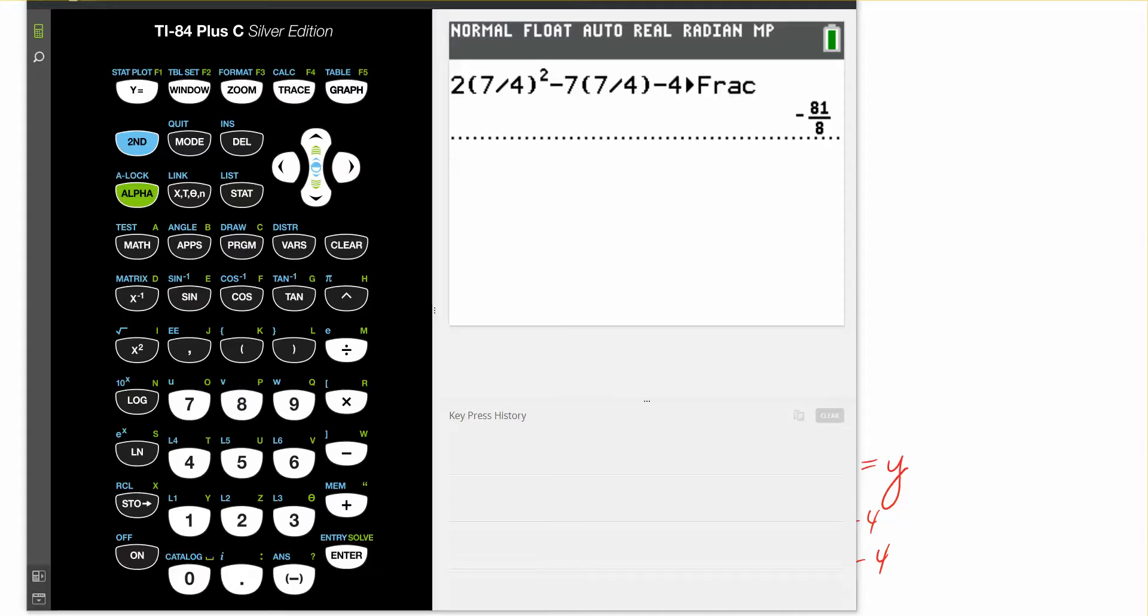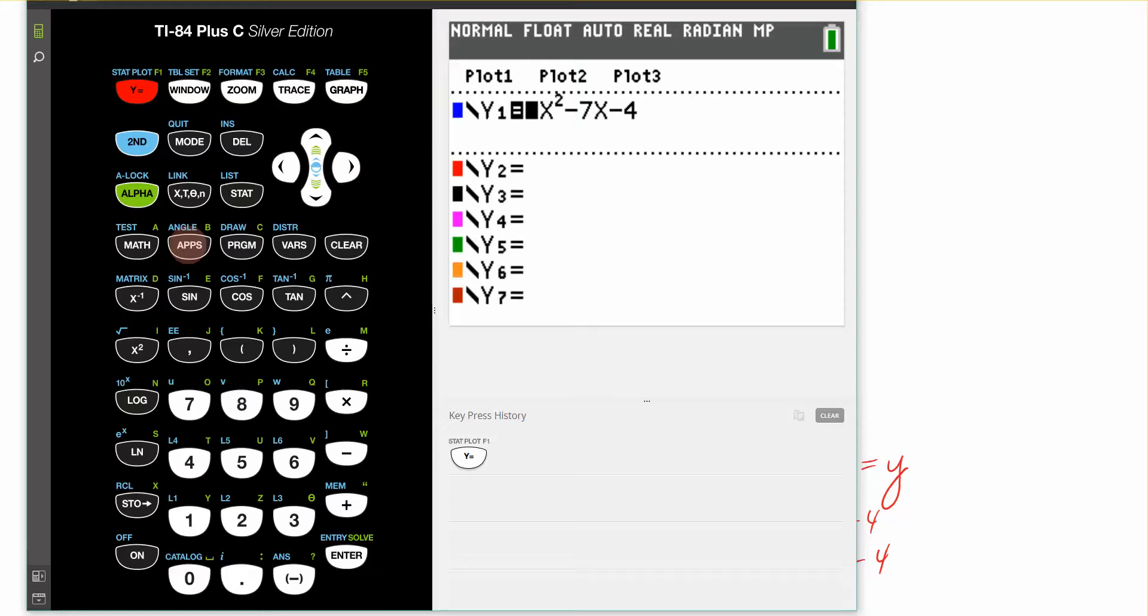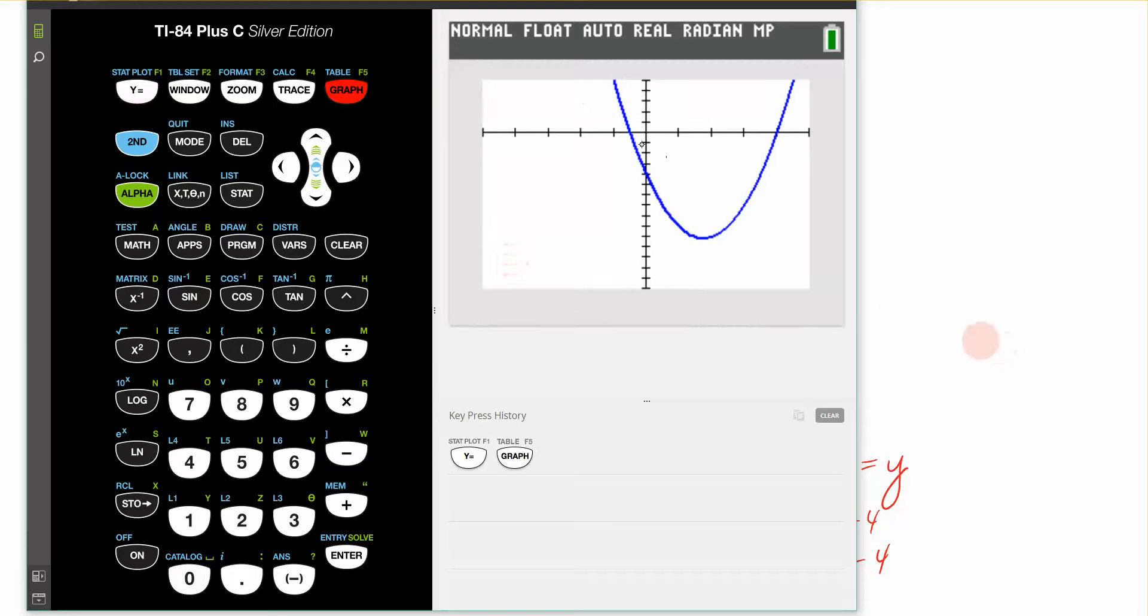Here I am at the graphing calculator. I'm going to go to y equals, and I've already entered the equation that we are graphing. I did change my window, and you can adjust your window if you like as well. I'm going to graph the function and you can see it right here. Now, I want to verify that the x-intercepts located in my picture, the y-intercept here on the graph, and my vertex, I want to verify that all of those things are the same as what I calculated.